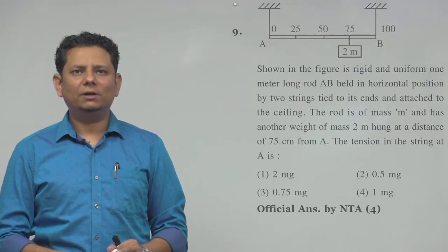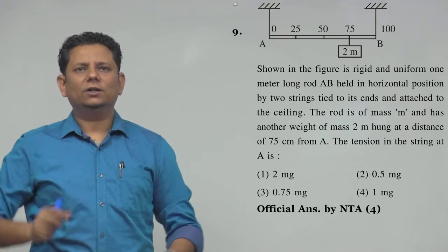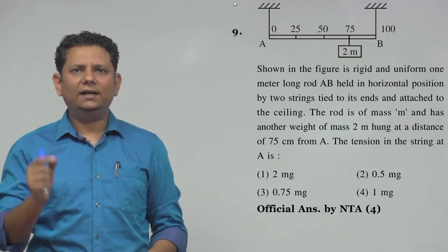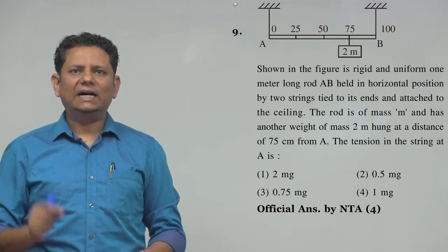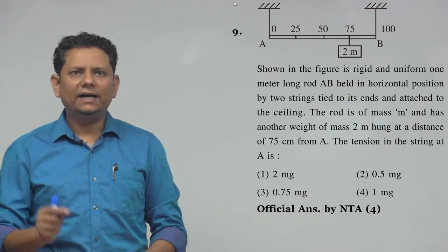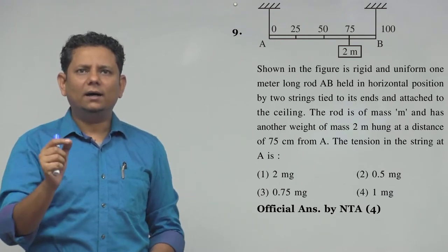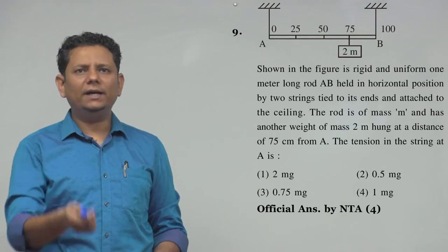The question says: shown in the figure is a rigid and uniform 1 meter long rod AB held in horizontal position by two strings tied to its ends and attached to the ceiling. The rod is of mass M and has another weight of mass 2M hung at a distance of 75 cm from A.